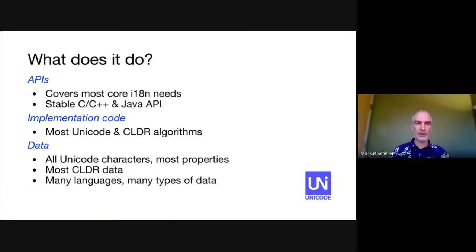ICU provides the core internationalization support needed for many use cases, especially for user interfaces using text. Its capabilities and its coverage of languages are growing over time, as needed by our users and driven by our contributors. Also, the Unicode project teams, including ICU, have been working with standards groups on better ways of doing internationalization. ICU is widely portable and gives applications the same results on all platforms and between C, C++ and Java software.